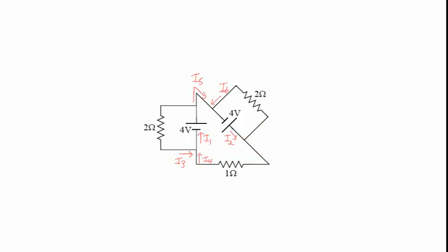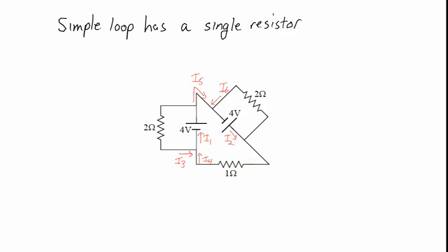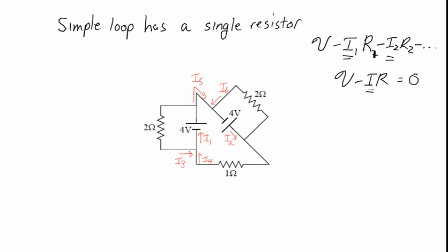Having six unknowns can be daunting if we had to solve this using six equations. To simplify that process, the next thing we want to do is look for simple loops. A simple loop is a loop in the circuit, like when we use the loop rule, which has only a single resistor in it. When we go through the loop rule, every time we go through a battery we add V, and every time we go through a resistor we subtract IR. If we can find a path with only a single resistor, there's only one variable in that equation, which means we can immediately solve for it and reduce the number of unknowns.